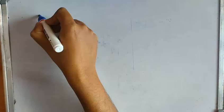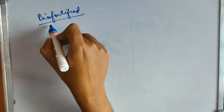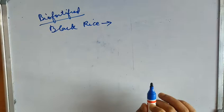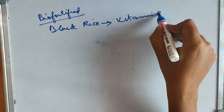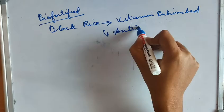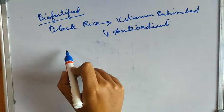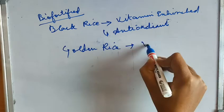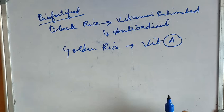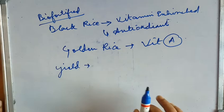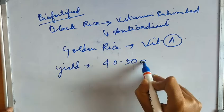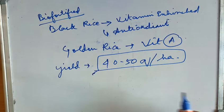There are bio-fortified rice varieties such as black rice, which is vitamin-enriched and full of antioxidants. We also have golden rice, which is rich in Vitamin A. These are some common bio-fortified rice types. With proper management, rice can yield 40 to 50 quintals per hectare.